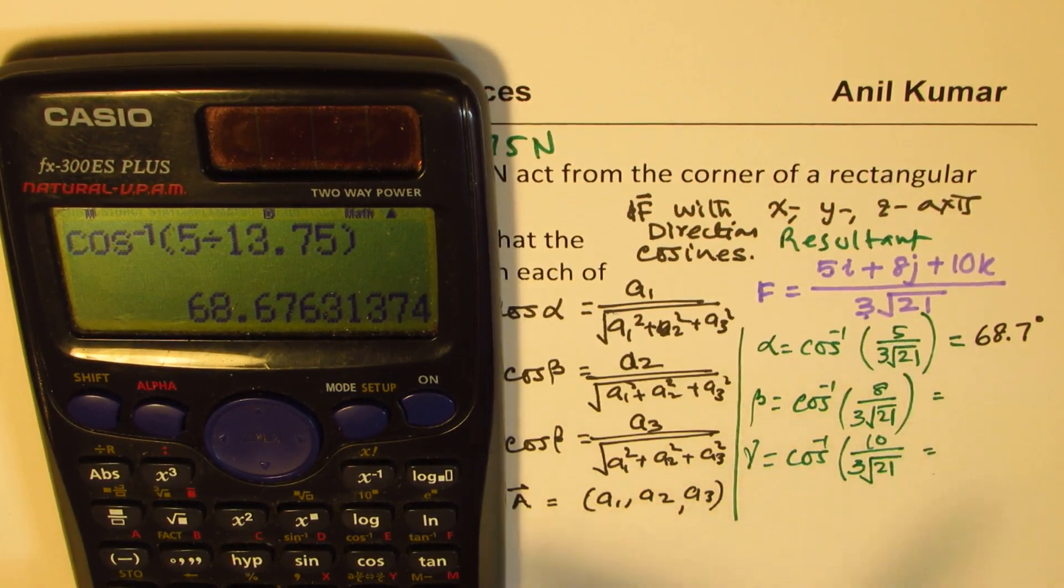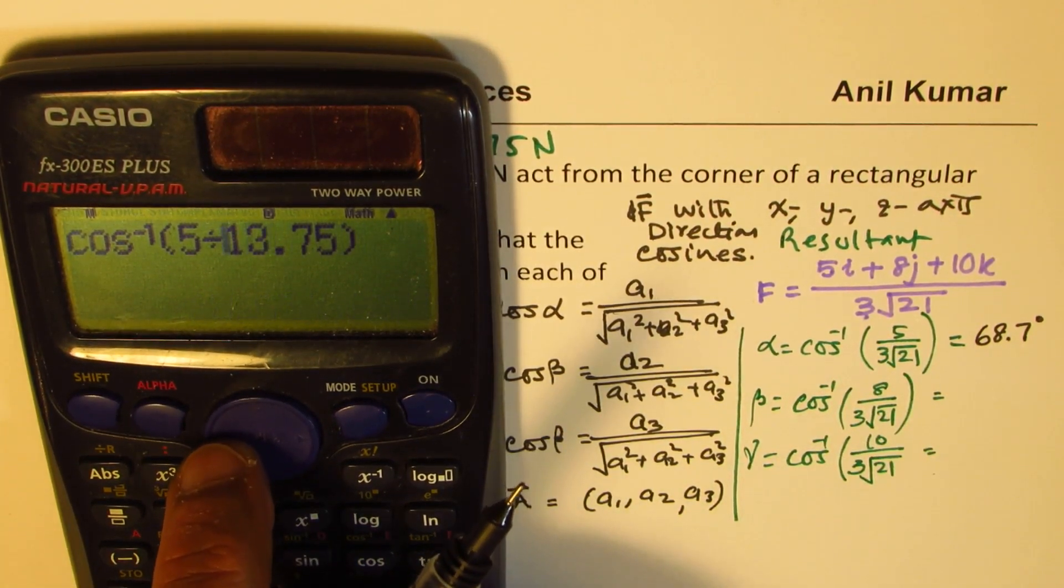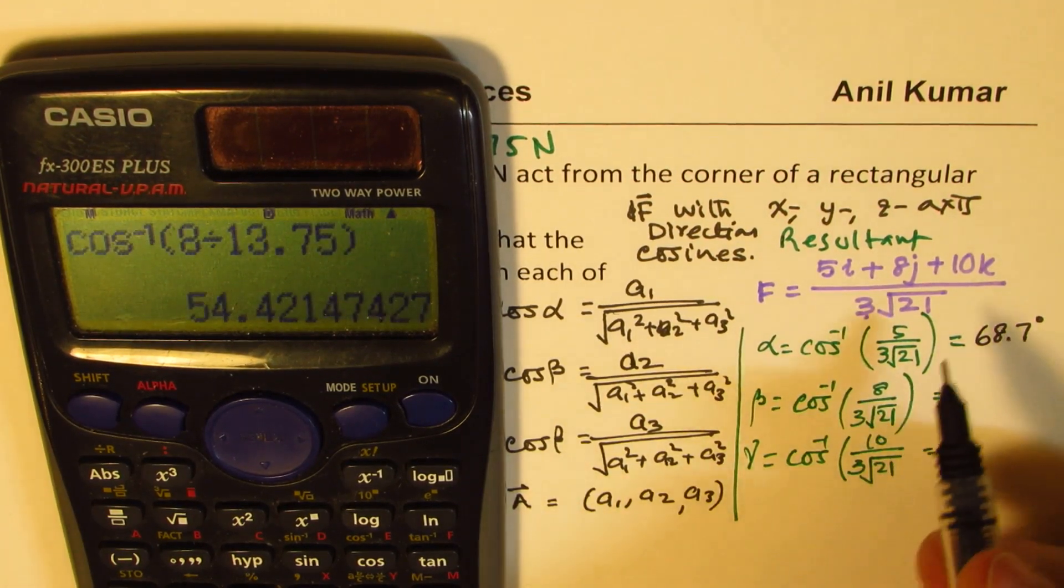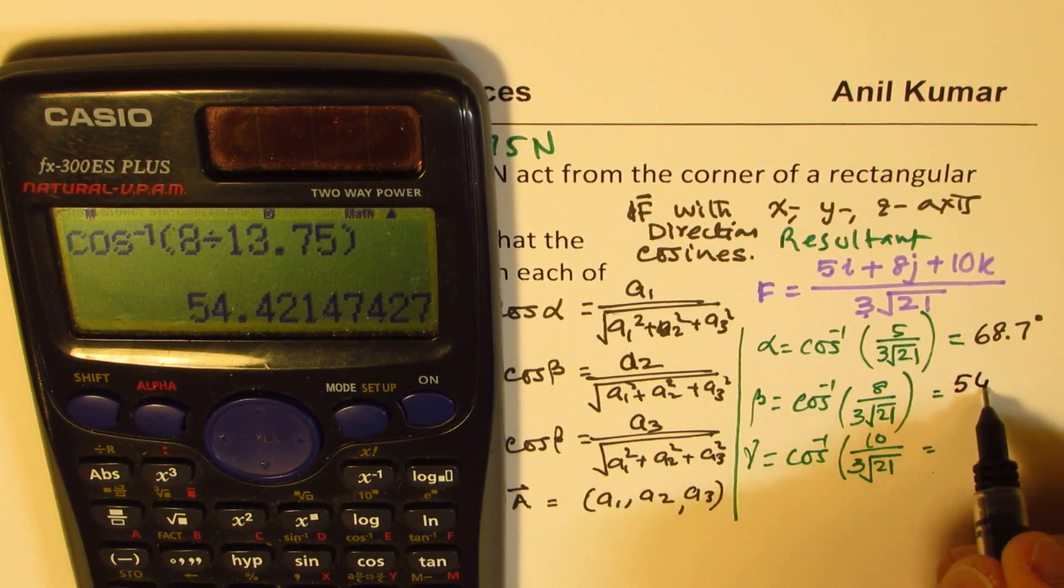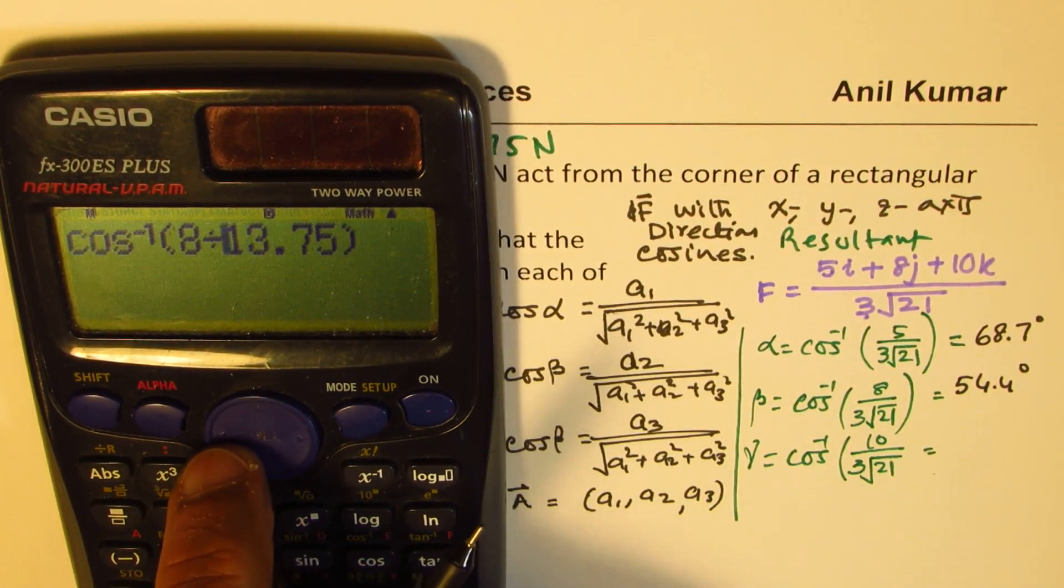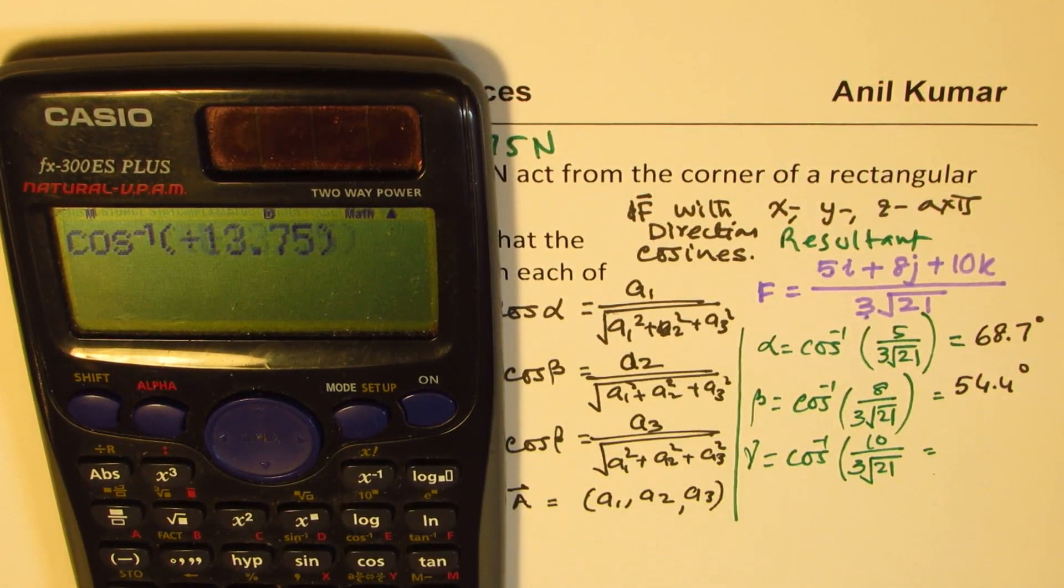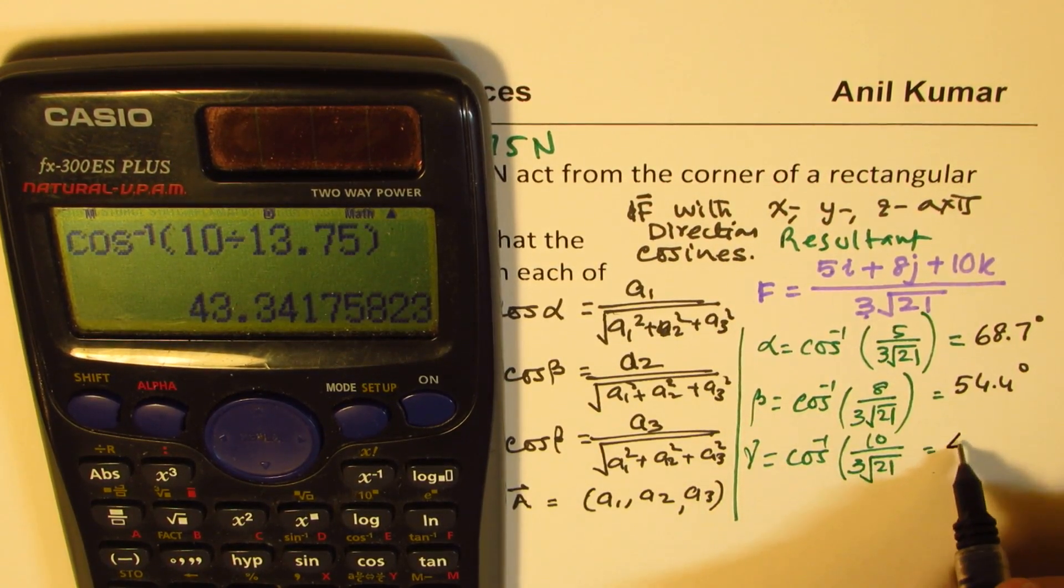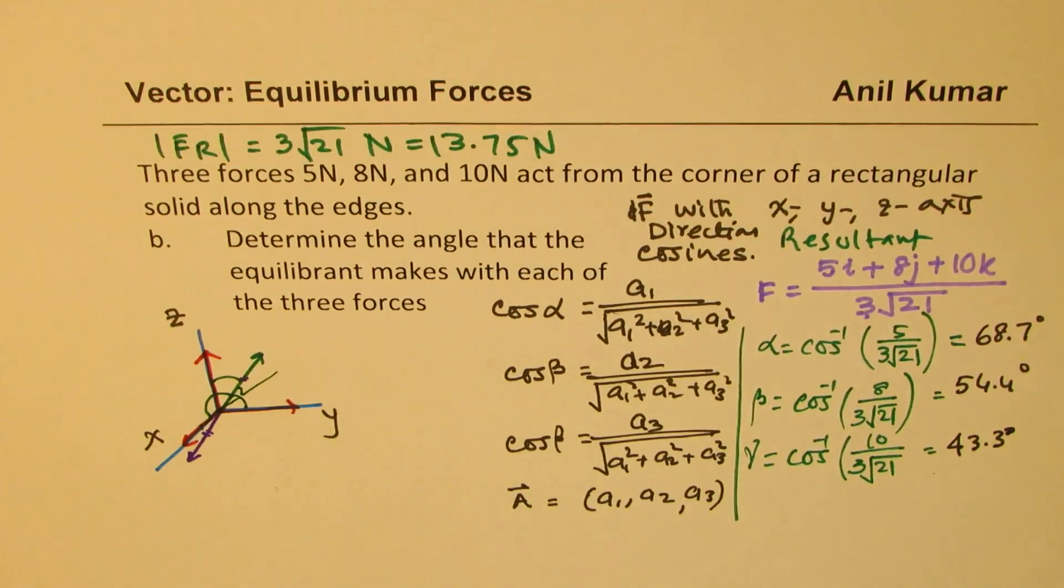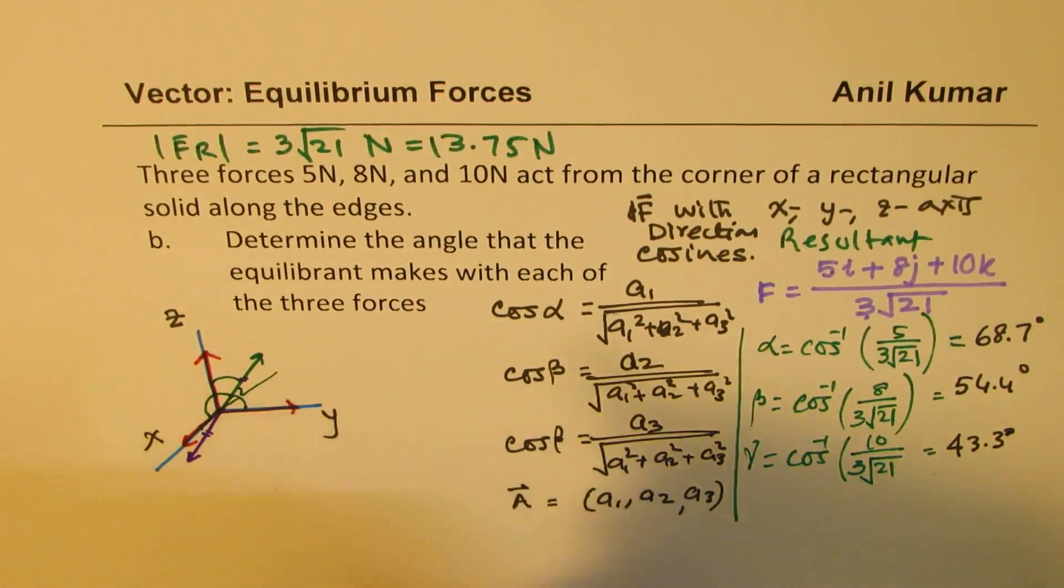Now we'll change 5 to 8 in this and calculate the answer. Well this is a fast way of doing it. 54.4 degrees and then we'll change this angle to 10. You should know all these tricks to save time especially in the test. Time is critical. So let's write just 43.3 degrees. So what we worked out here is the angle which the resultant makes.